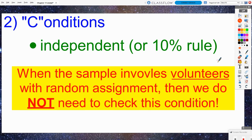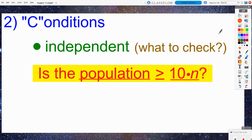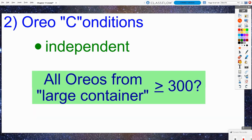Now, the independent, or the 10% rule. When our sample involves volunteers with random assignment, which is not the scenario in this problem, then we don't technically need to check the independent condition. But we did randomly select these Oreos from a population, so we do need to check the independent condition. Is the population at least 10 times our sample size? The population is all Oreos from the large container. May I assume that there are more than 300 Oreos in this large container? Since they used the adjective large, it's making me believe that this will be safely assumed to be true. We don't know for sure if this is 100% true, so we will just write out assume true.